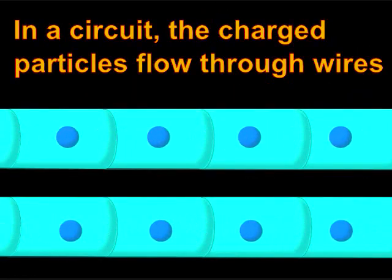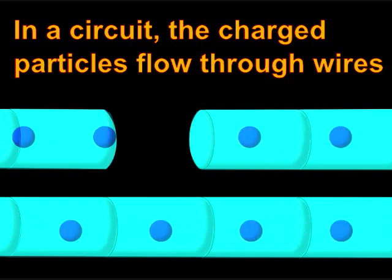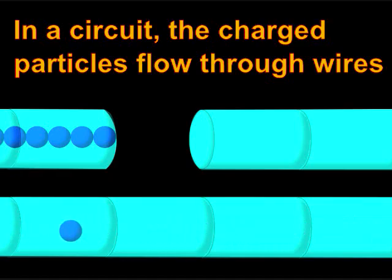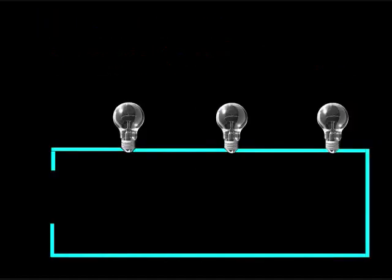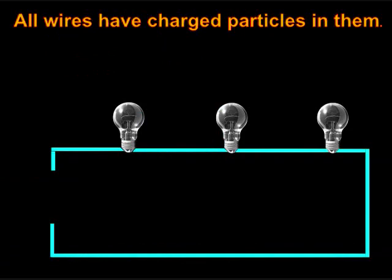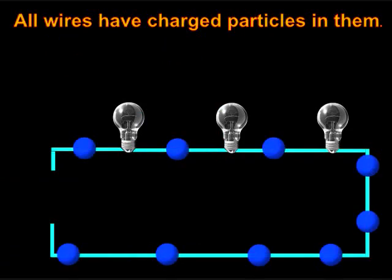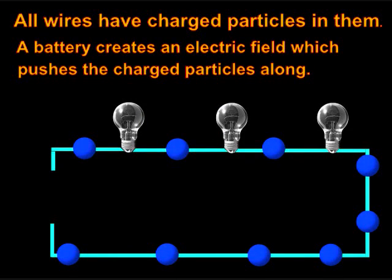In a circuit, the charged particles flow through wires. If the wire is cut, the current stops flowing. All wires have charged particles in them. A battery creates an electric field which pushes the charged particles along.